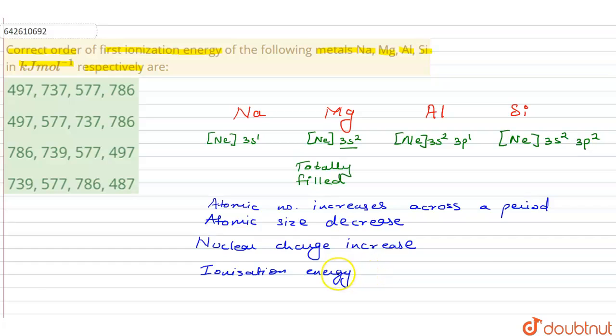They would be tightly bounded to the nucleus, and hence to remove those valence electrons it would take a lot of energy. So ionization energy would also increase across a period.